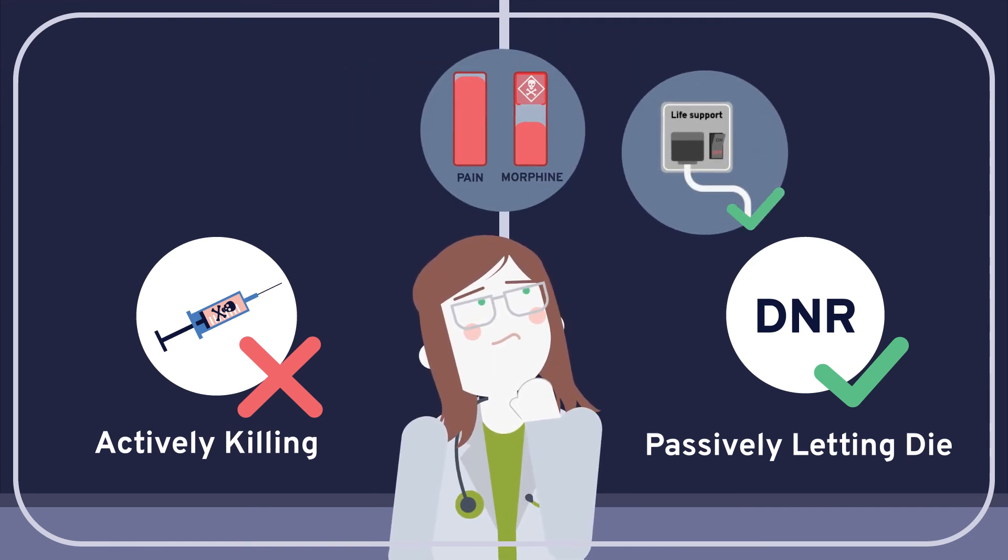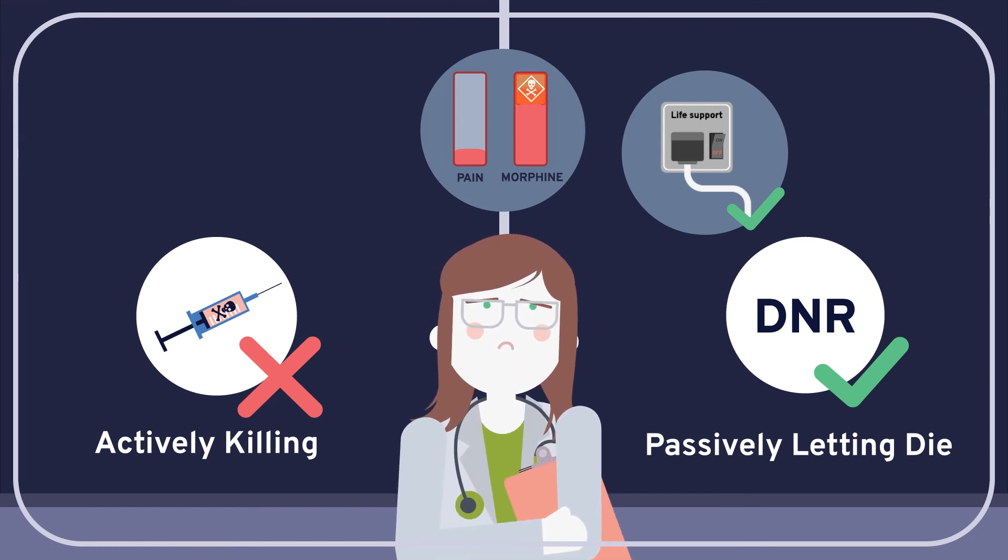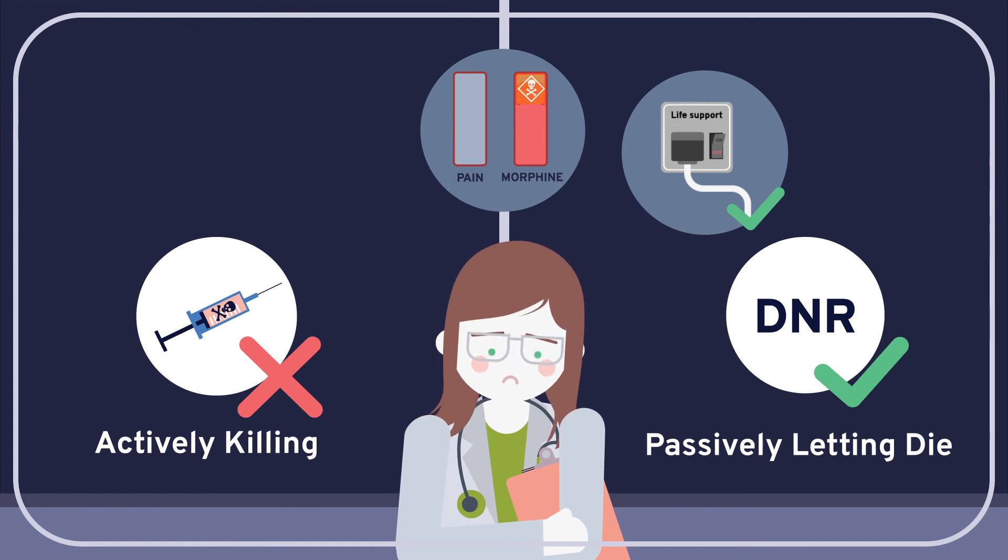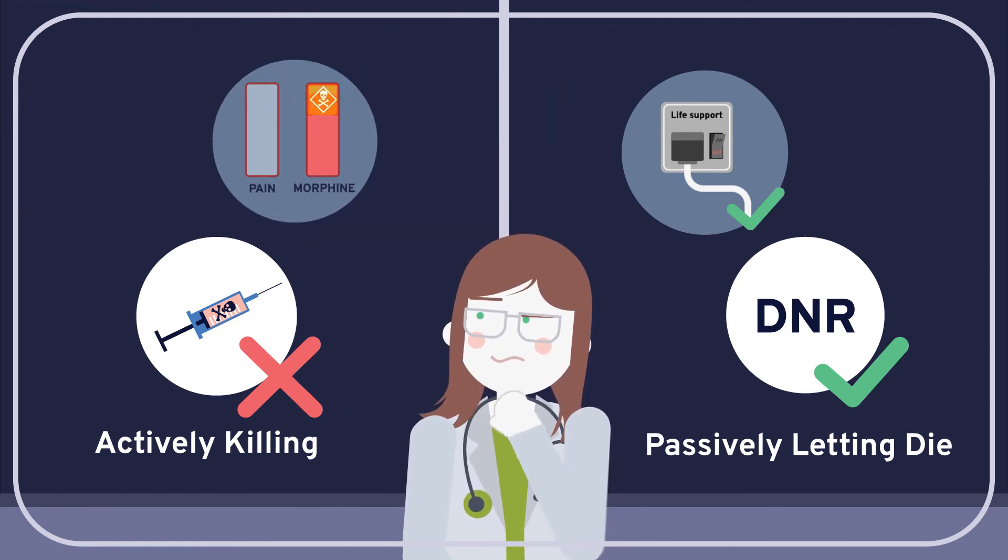What if she significantly increases his morphine dosage, intending to effectively manage his intense pain, but also knowing that it's likely to halt his breathing? If this action does lead to death, it would seem to be an act of killing, rather than an act of letting die.